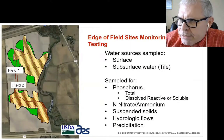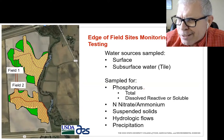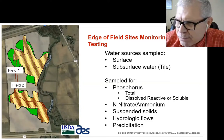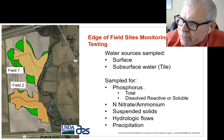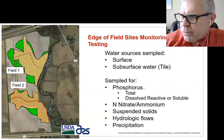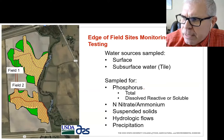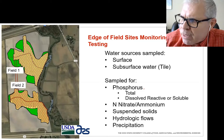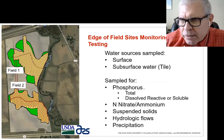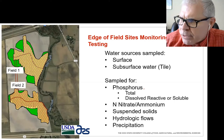We are looking at these sites, and the areas for different flows from subsurface and surface can be a little different, but we account for that in our results. We are sampling for phosphorus — both total and dissolved reactive or soluble phosphorus — nitrate nitrogen, ammonia and ammonium, as well as suspended solids, hydrologic flows, and precipitation, to understand what's going on in relationship to water movement off-site.